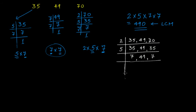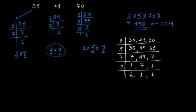Now you have 7, 49, and 7. The next prime after 5 is 7. Dividing by 7: 7 gives 1, 49 gives 7, and 7 gives 1. Divide by 7 again: 1 stays as is, 7 divided by 7 gives 1, and 1 stays as is. All quotients are now 1. So LCM = 2 × 5 × 7 × 7 = 490, which is the same result as we got in Part 1.